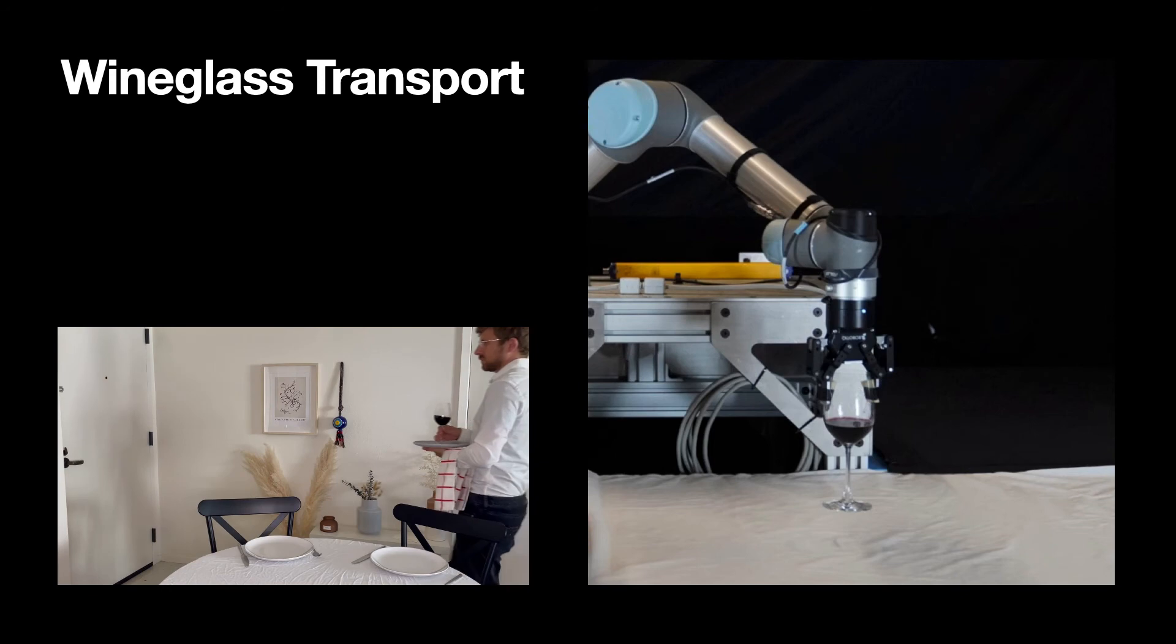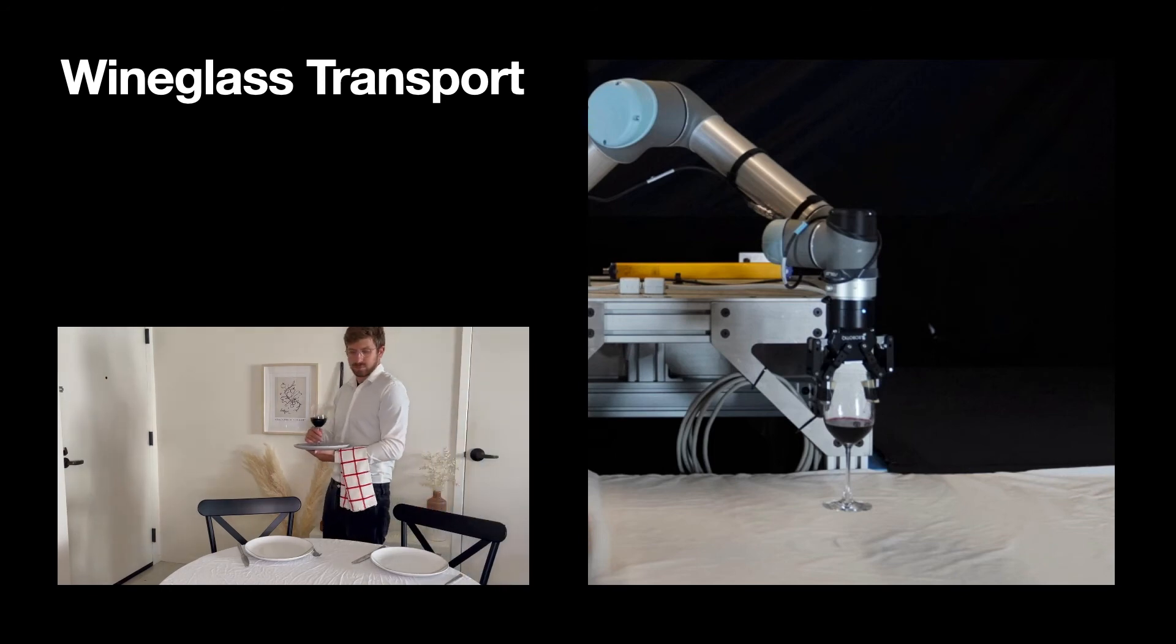In a final experiment, we revisit the rushing sommelier problem and test transport of wine in an open top container. For this experiment, we do not test baselines for safety and to avoid stain cleanup.